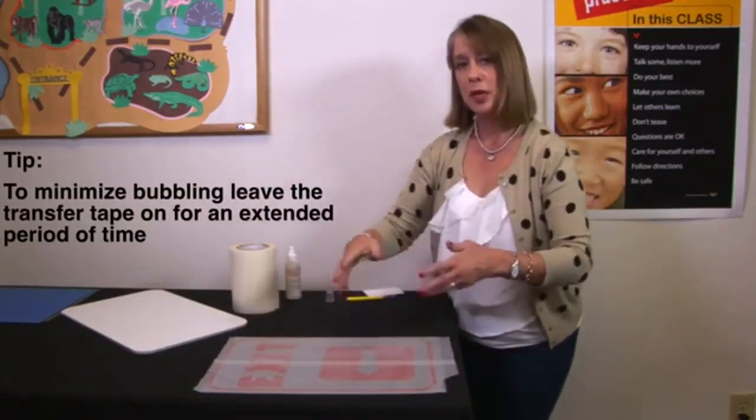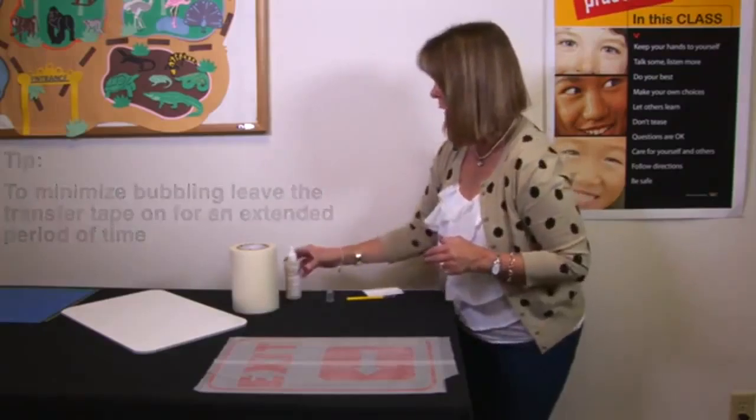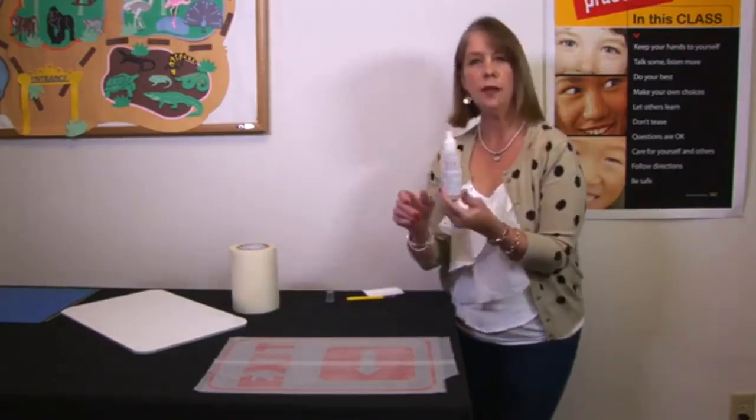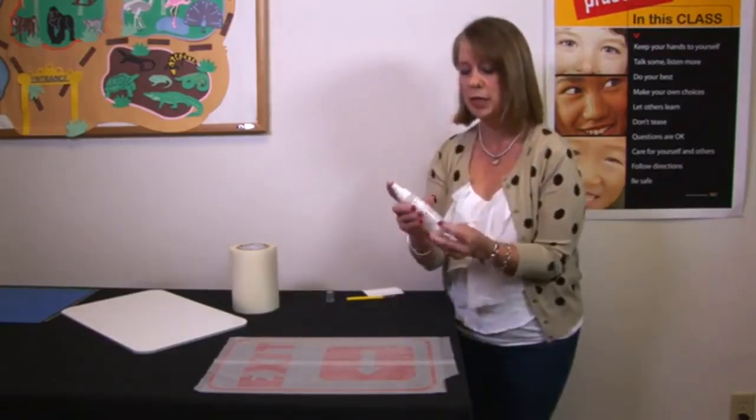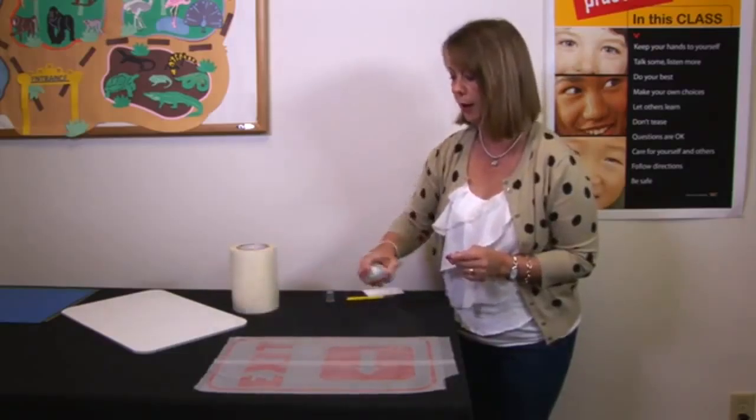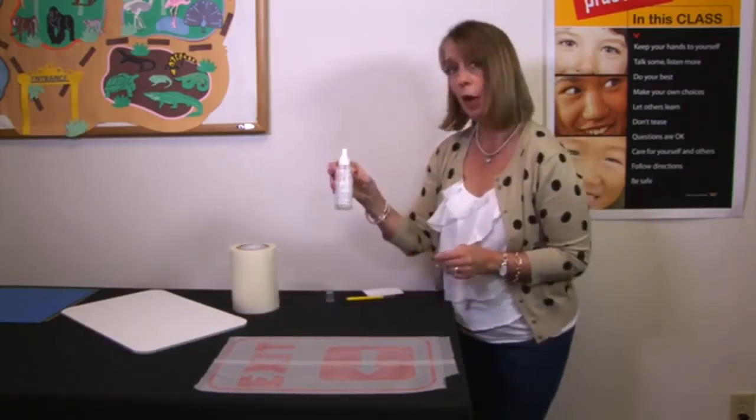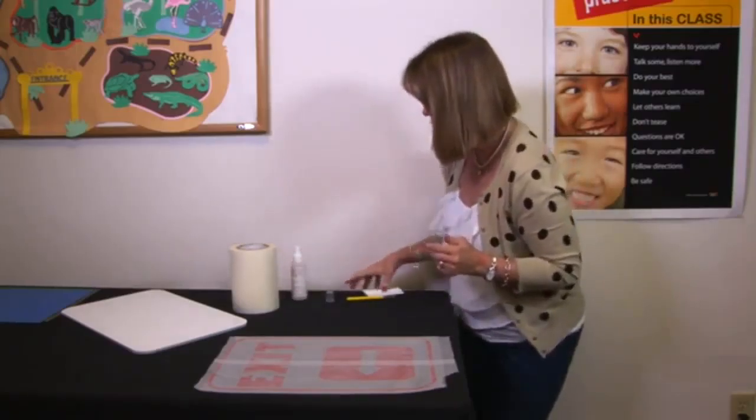Now the next step is we want to transfer the vinyl onto the transfer tape. To help with that we have this application fluid. You want to take your fluid and just lightly spray the transfer tape. This is going to help get the air bubbles out as you're transferring it.